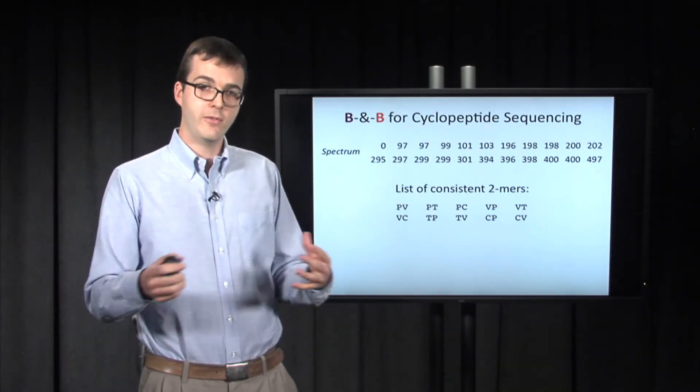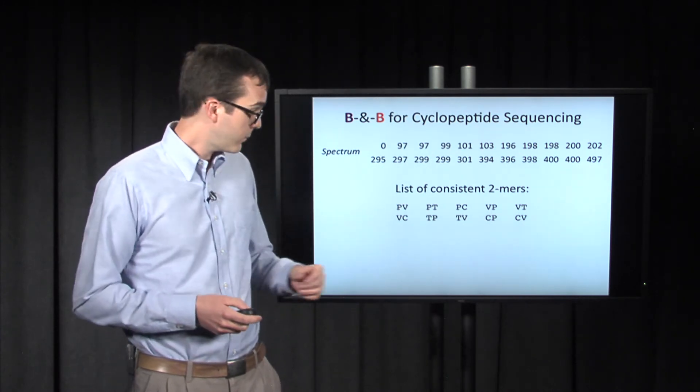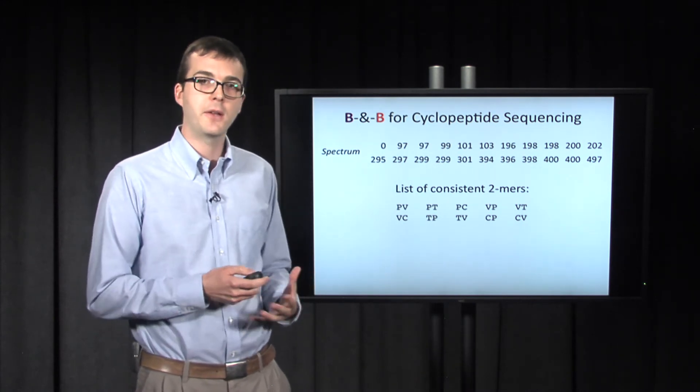And after we do this step, and we figure out what it is that we need to trim, we're left with 10 amino acid strings of length 2. From our 72, we've cut it down to 10.